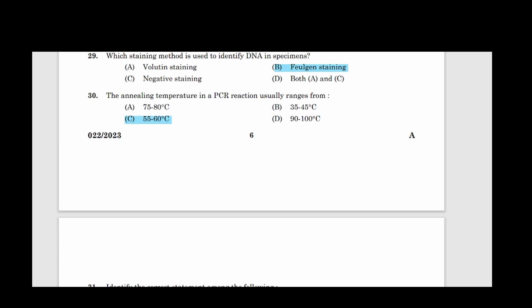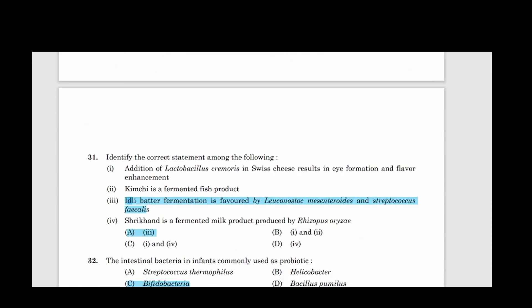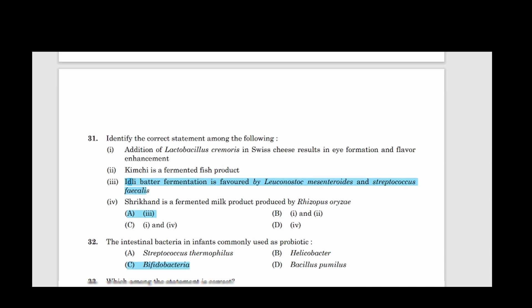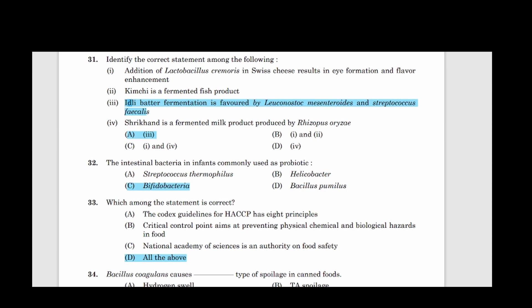Question thirty: The annealing temperature in a PCR reaction usually ranges from? Answer option C, 55 to 60 degrees Celsius. Thirty-one: Identify the correct statements among the following. Answer option A, Third statement is correct. Thirty-two: The intestinal bacteria in infants commonly used as probiotic. Correct answer option C, Bifidobacteria.